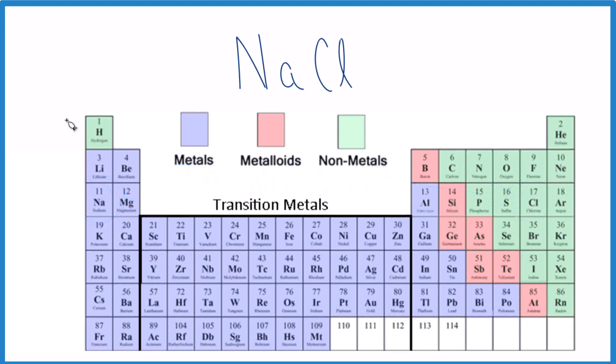And we should note that the period number, 1, 2, 3, the period number tells us how many energy levels. So sodium has 3, and then chlorine, 3 energy levels. Let's take a look at that.